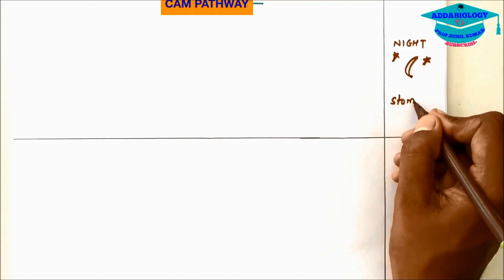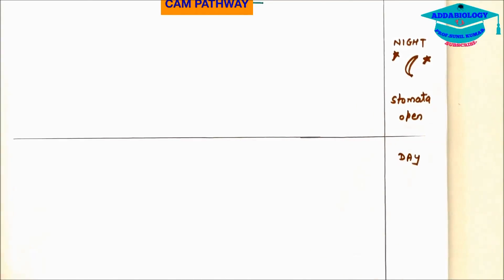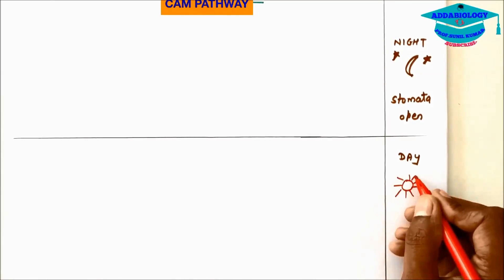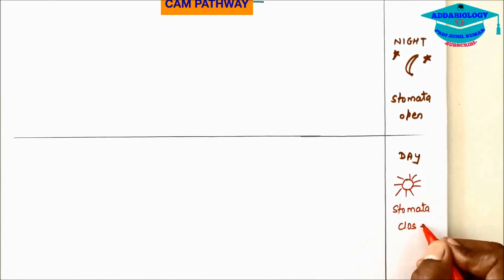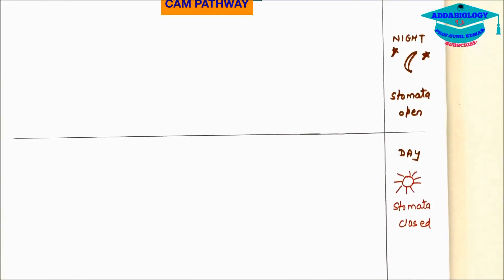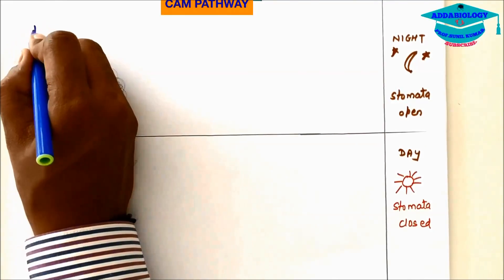We divide it into 2 parts. First part is night which is resembled by moon and the stars which shows stomata open. Second phase is day when stomata is closed.